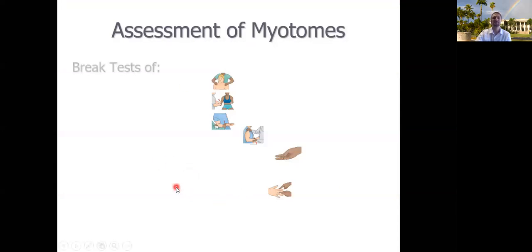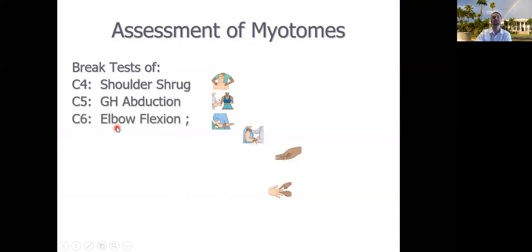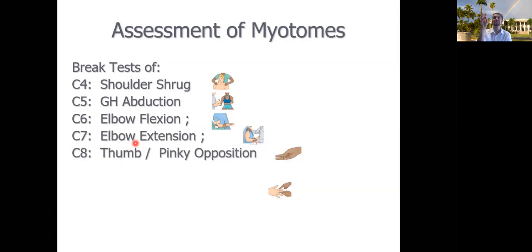So here we can see all the myotome assessments. We're performing a break test. C4, we do a resisted scapular elevation using the upper trap and the levator scap. C5 nerve root is abduction, so using the deltoids. C6 resisted elbow flexion, so bicep and the brachialis. C7 resisted elbow extension, so you're assessing the triceps. Thumb and pinky opposition for C8. That's going to be opponens pollicis of the thumb and opponens digiti minimi of the pinky. And then the last one, T1, finger abduction. That occurs at your MCP, where the metacarpals meet the phalanges. So those are all break tests for the C4 to T1 nerve roots.